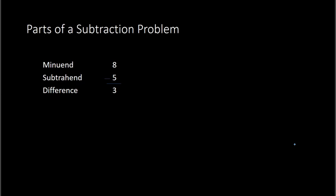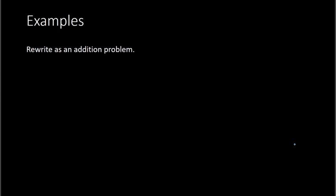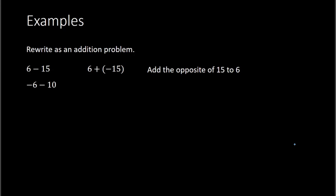So this question might be asked as: what is the difference of 8 and 5? What you would do is subtract 8 minus 5. Now let's work with some examples where we are rewriting the following as an addition problem. So 6 minus 15, I can rewrite this as 6 plus negative 15 — we're adding the opposite of 15 to 6. Negative 6 minus 10 is the next example, which is the same thing as adding the opposite of 10, so we have negative 6 plus negative 10.